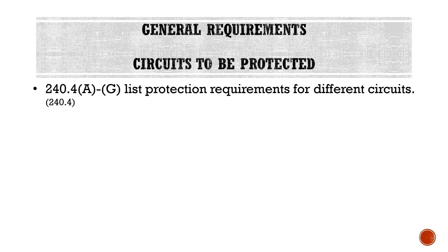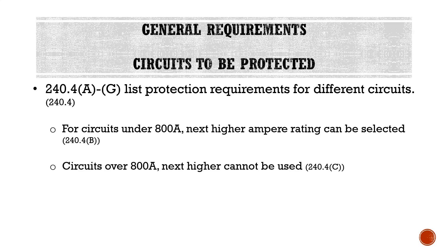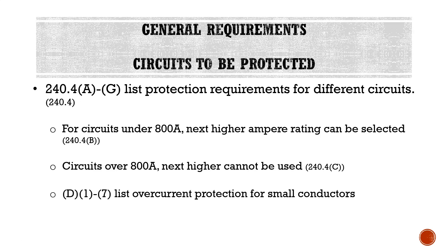Looking at our general requirements, we have a list of circuits that must be protected. Section 240.4 A through G lists protection requirements for different circuits. For circuits under 800 amps, the next higher ampere rating can be selected. For circuits over 800 amps, the next higher cannot be used. Section 240.4 D1 through 7 lists overcurrent protection requirements for small conductors. The most important concept here is this distinction between circuits under 800 amps and circuits over 800 amps.